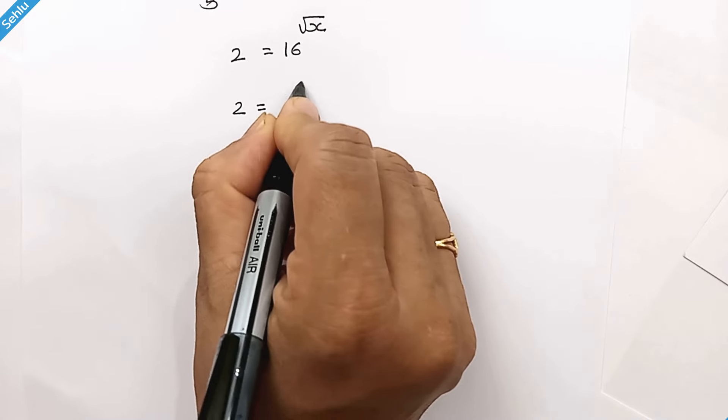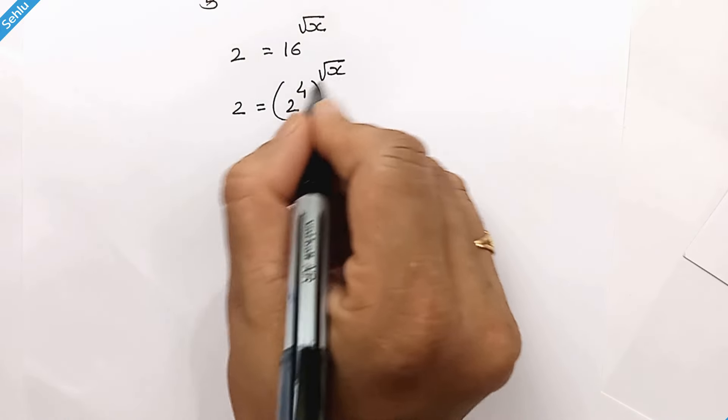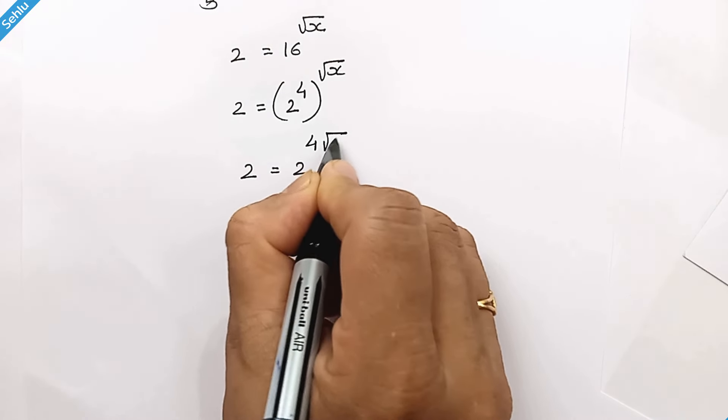Now 16 is 2 to the power 4, right? And we can multiply these two, so it will be 2 is equal to 2 to the power 4 times square root of x.